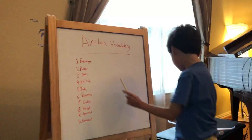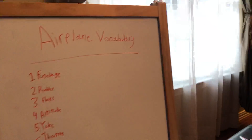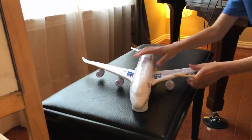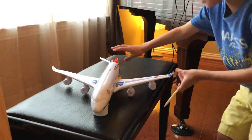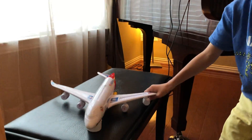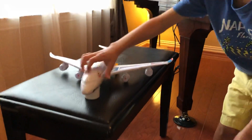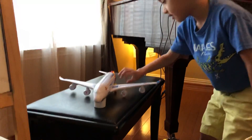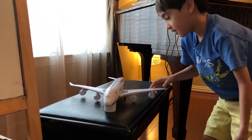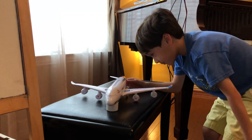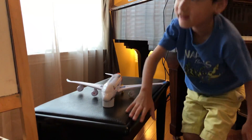The first word is fuselage, which is the body of the airplane. A fuselage means the body of the airplane where the passengers are stored and the luggage is. That includes the cockpit, the passenger area, and the luggage hold way, way down there.